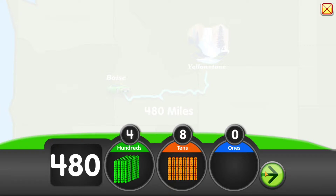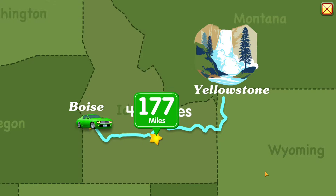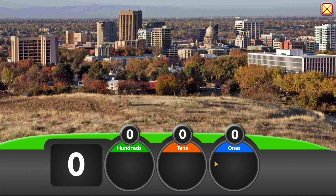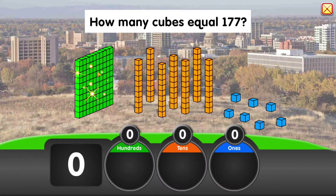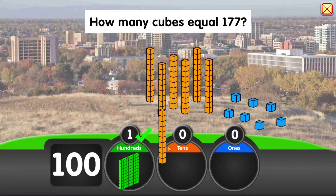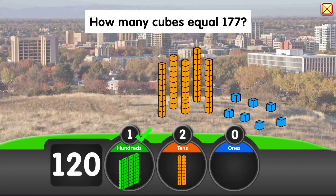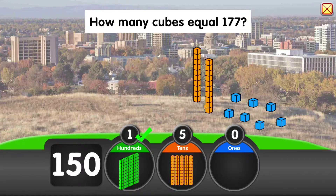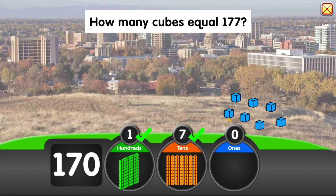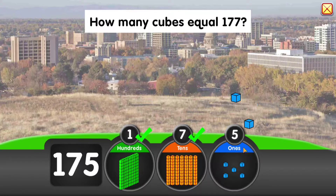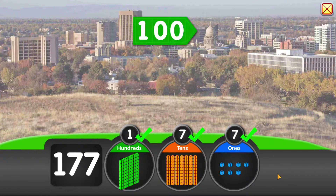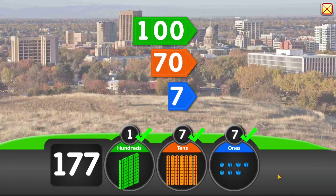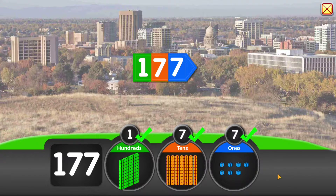Come on, let's go! It's 177 miles to our first stop. How many cubes equal 177? 100 plus 70 plus 7 equals 177.